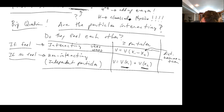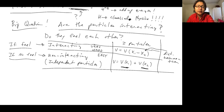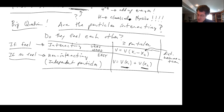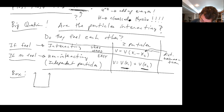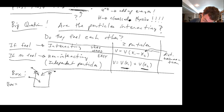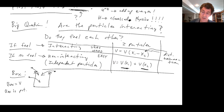Student asks: does this potential apply to both identical and non-identical particles? Professor explains: it applies to everybody. The way to think about it is: I have a box, and I'm just throwing the particles into the box. They feel the potential of the box — the box equals the potential. Does that answer your question? Yes. Okay.